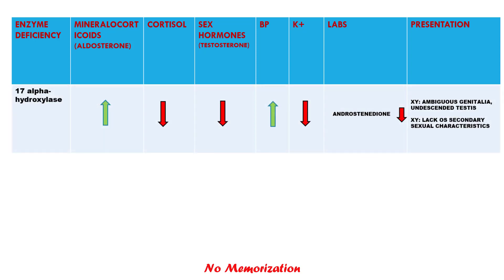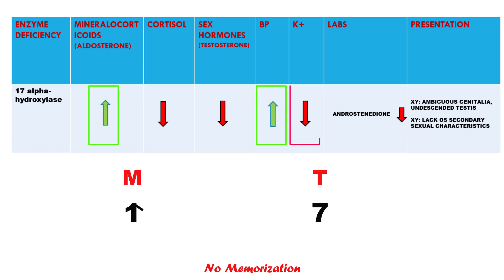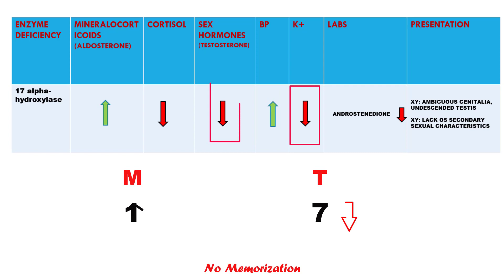Now the second one, 17-alpha-hydroxylase deficiency. Apply the same mnemonic: put number 1 below M and number 7 below T. Convert number 1 into an up sign as before. Mineralocorticoid goes up as the sign indicates, which will also lead to high blood pressure and decreased potassium. Cortisol is always down. No change in the letter 7, which means testosterone goes down, as indicated by a decrease in androstenedione.